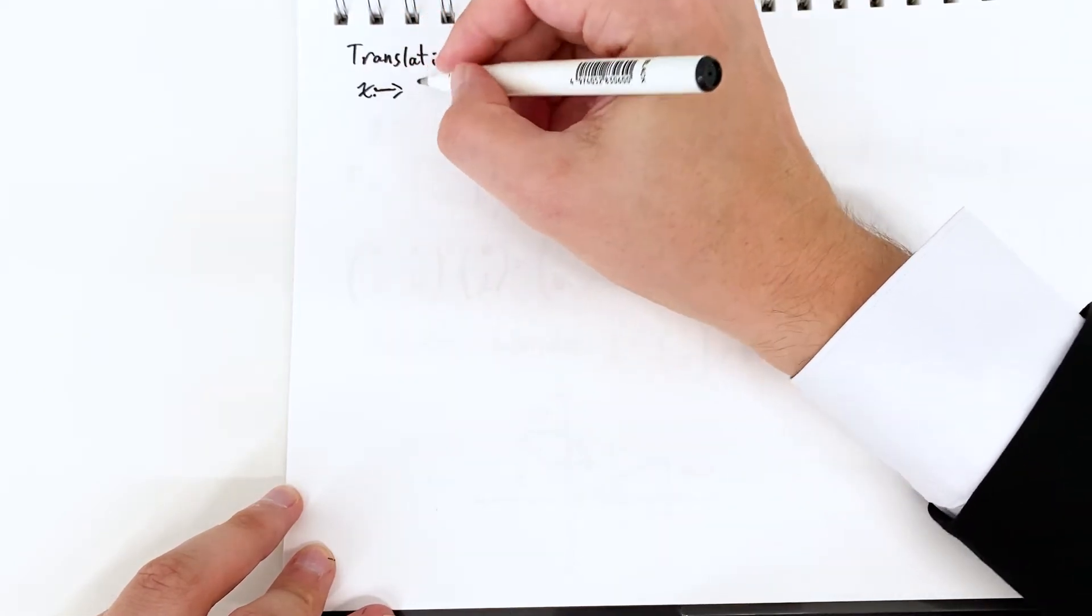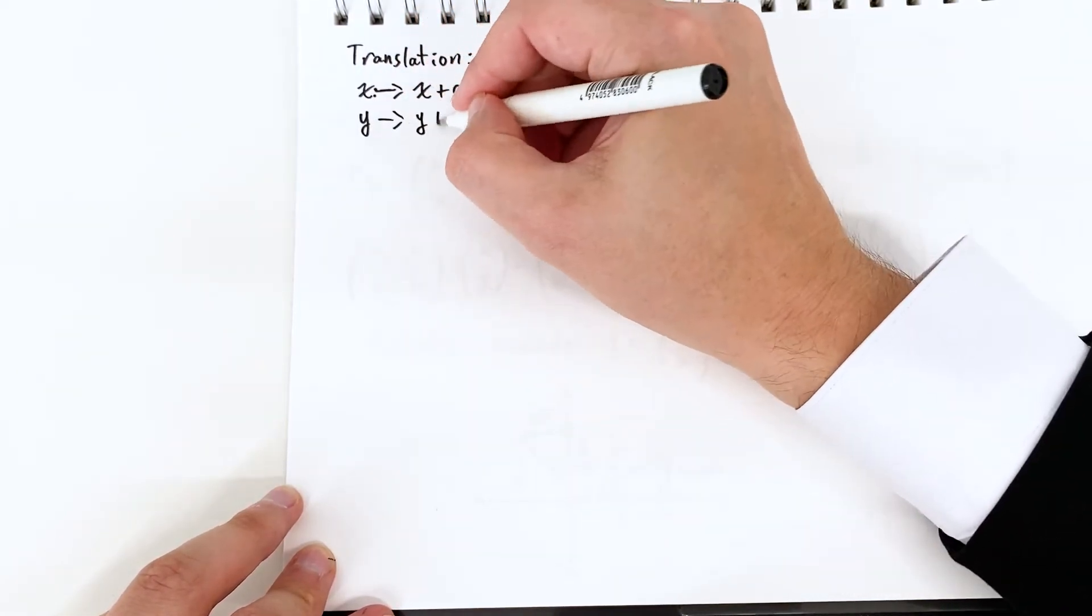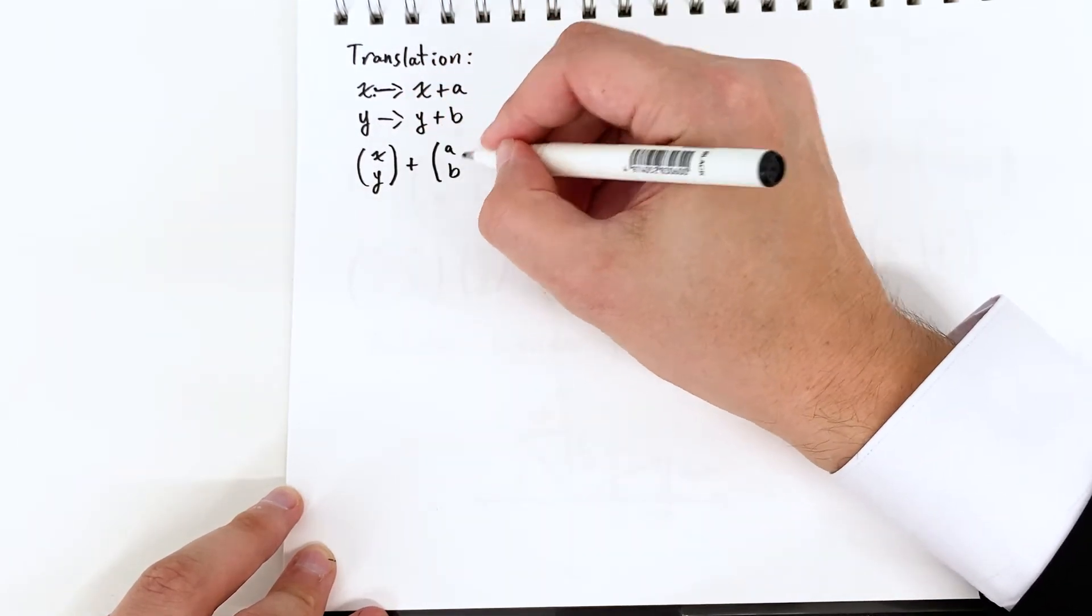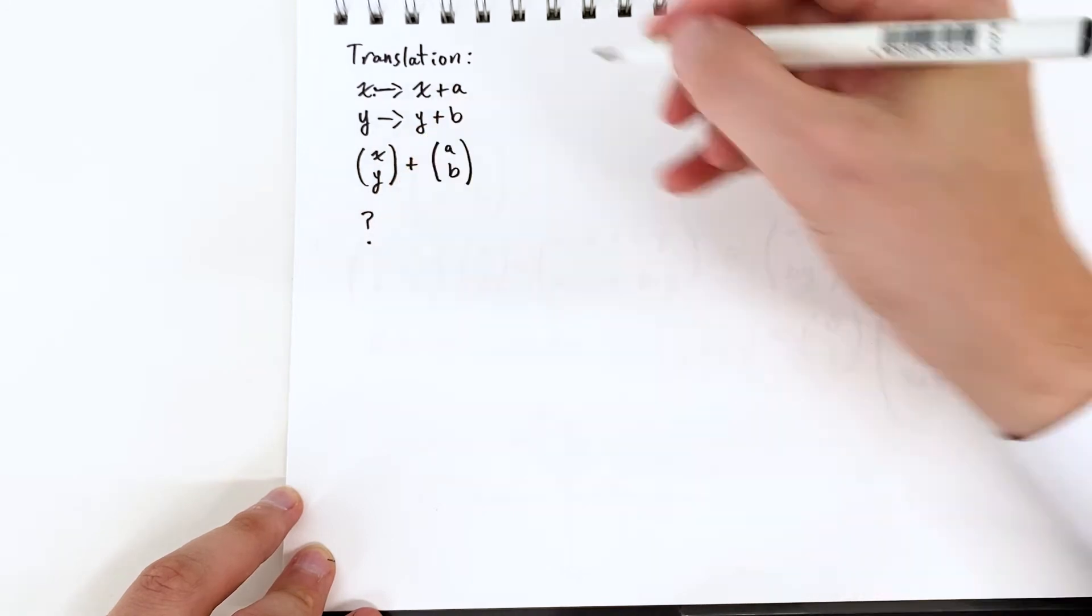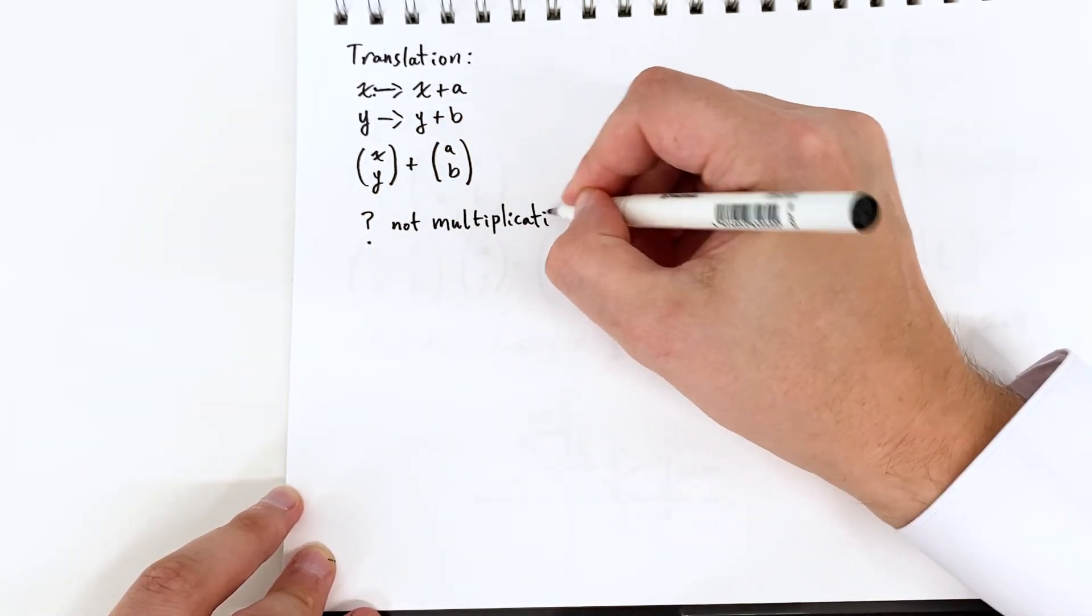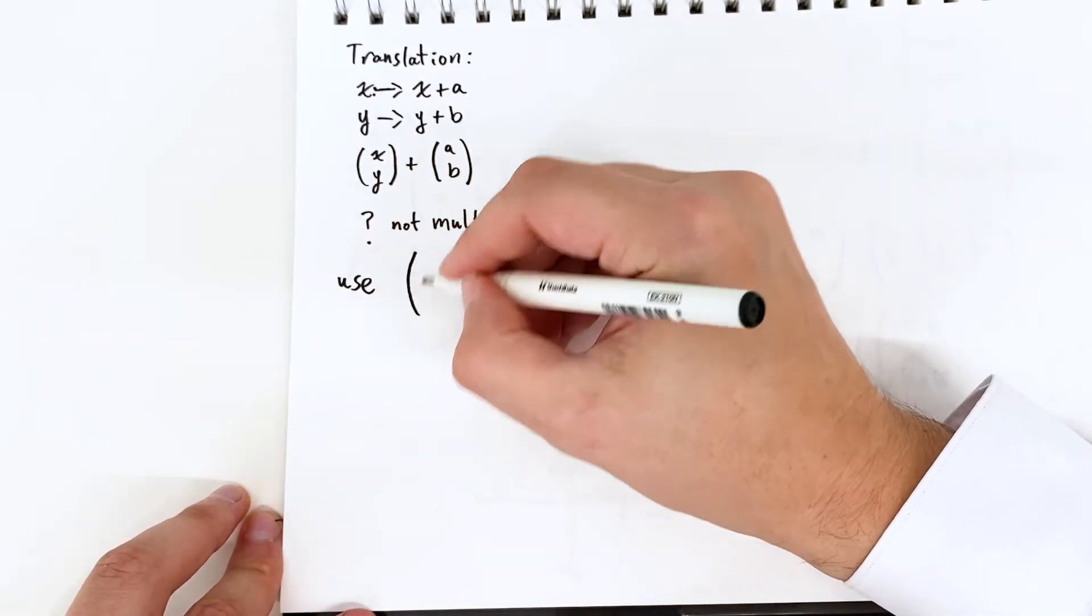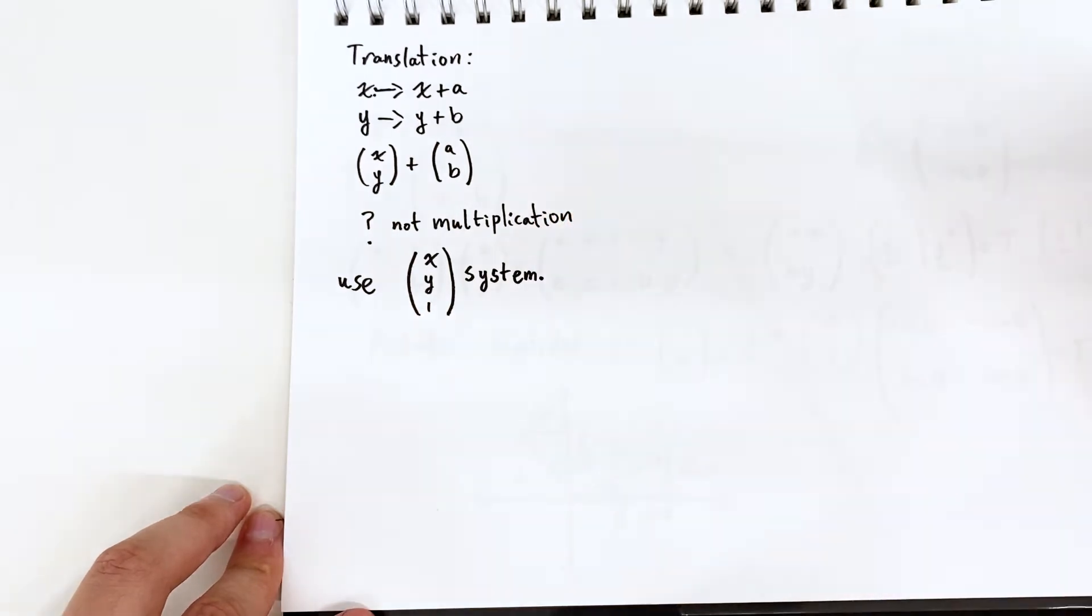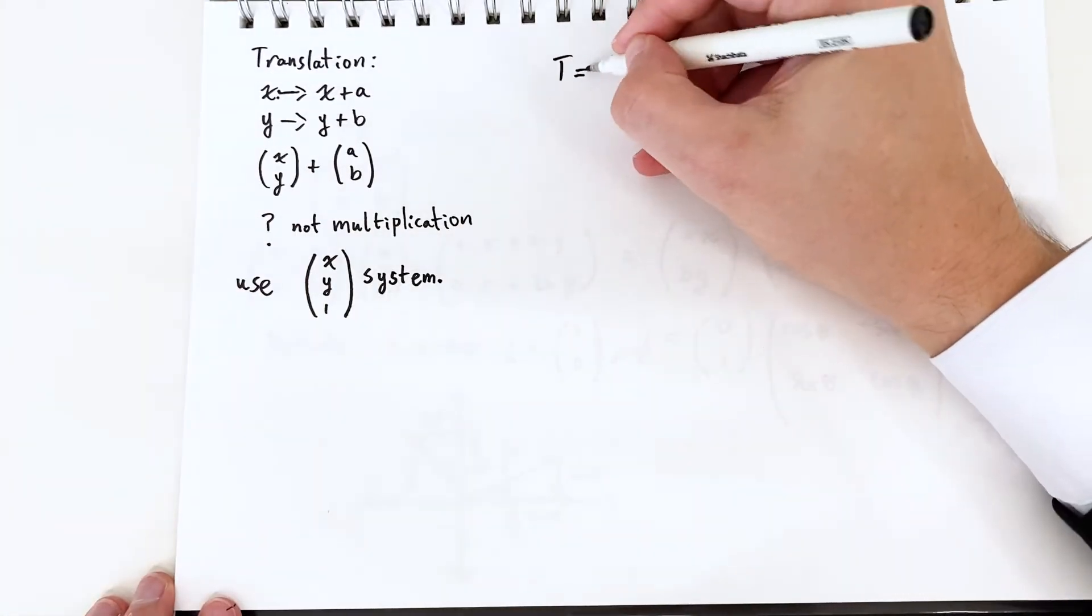Translation is a little bit trickier. What we want to do is we want to pick up the vector x y and send it to x plus a, y plus b. We can write this as vector addition but there's a problem with that. And the problem is that's not multiplication. So the way we get around this is we introduce a new dimension just one. So we have x y and one.